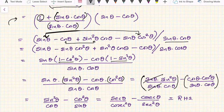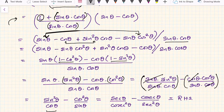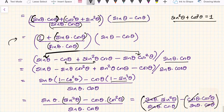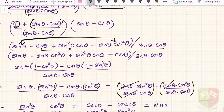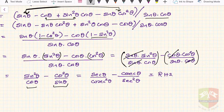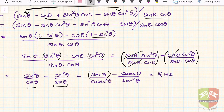Now sin θ cancels with sin θ, leaving sin² θ / cos θ; and cos θ cancels with cos θ, leaving cos² θ / sin θ. This is exactly what we intended to find! Writing in reciprocal form gives sec θ / cosec² θ − cosec θ / sec² θ, which is the desired RHS.